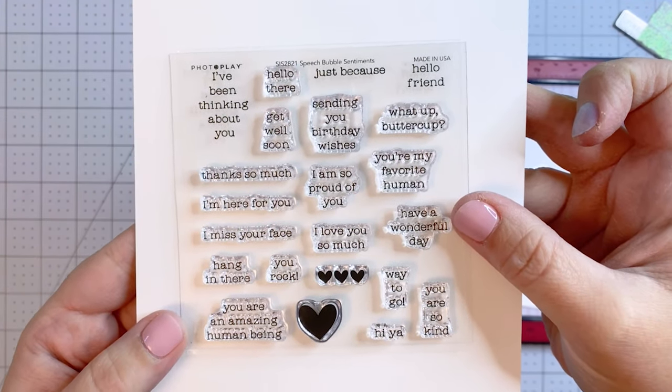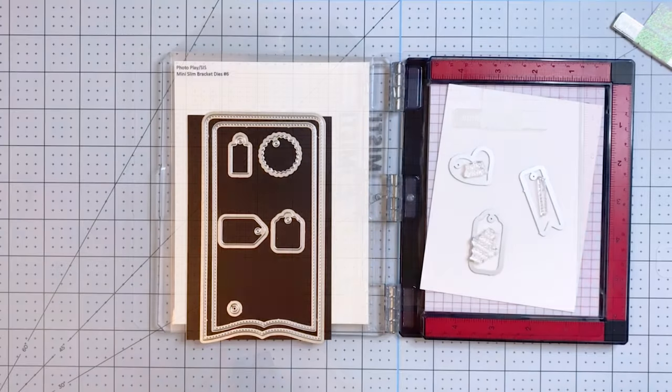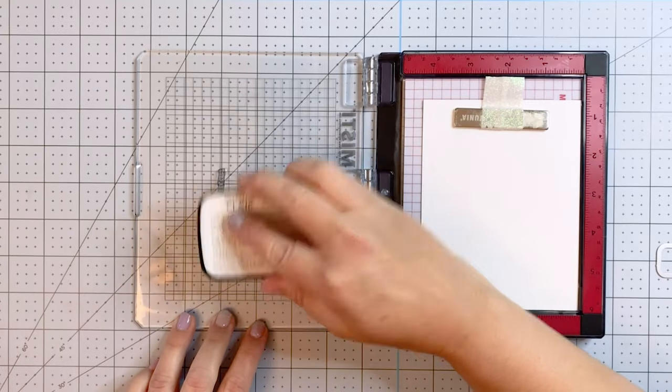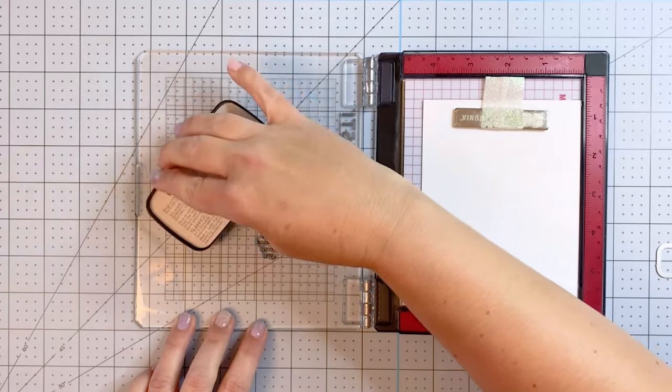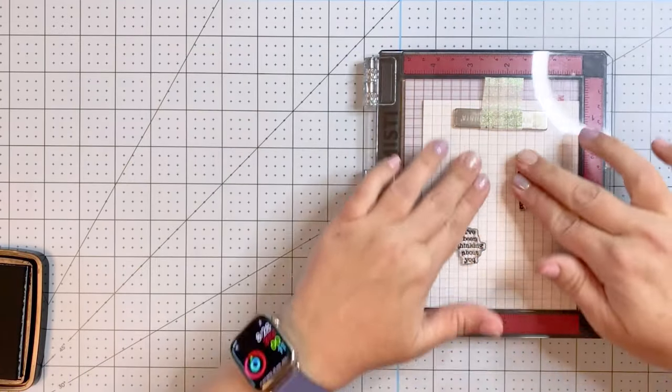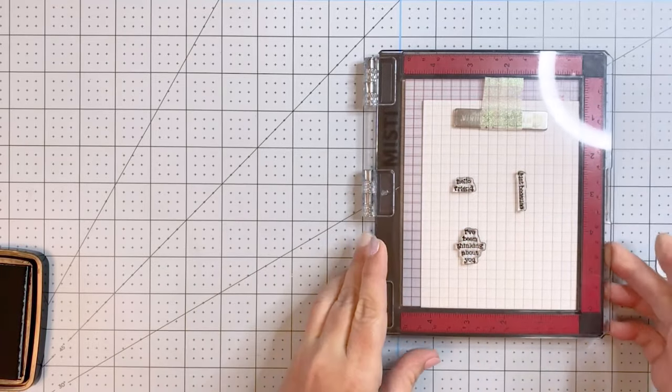I'm going to be stamping some speech bubble sentiment stamps. These fit perfect inside those little charm dies I'm using. I've been thinking about you, just because, and hello friend, but there's lots of fun different sentiments in that set. I'm stamping these in some black pigment ink so I can get a nice crisp and really dark image from these stamps.